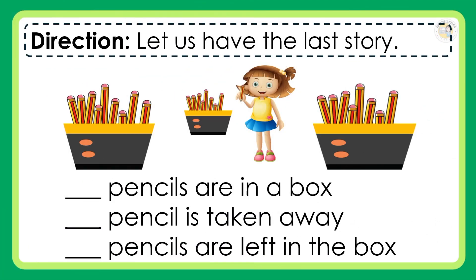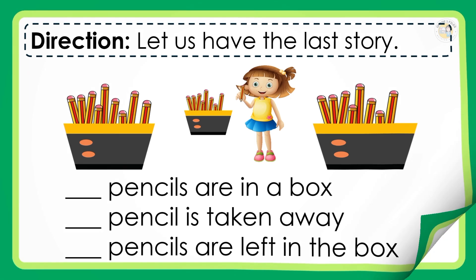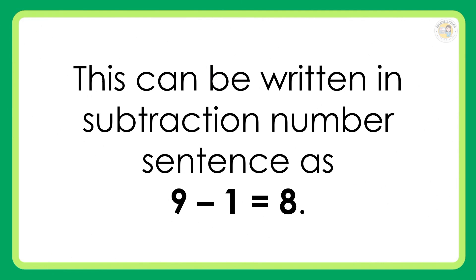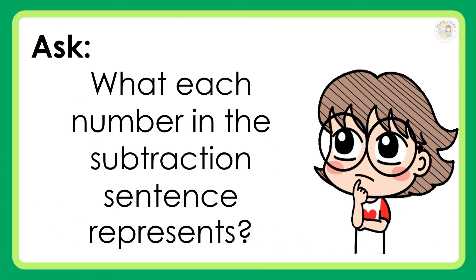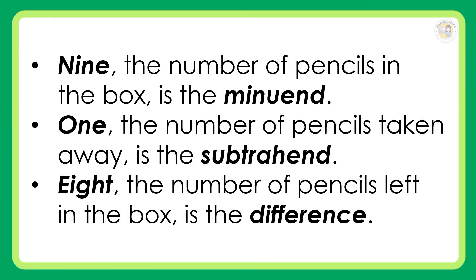Direction: Let us have the last story. Pencils are in a box. Pencil is taken away. Pencils are left in the box. This can be written as the subtraction number sentence: 9 minus 1 is equal to 8. 9 is the number of pencils in the box — the minuend. 1, the number of pencils taken away, is the subtrahend. 8, the number of pencils left in the box, is the difference.